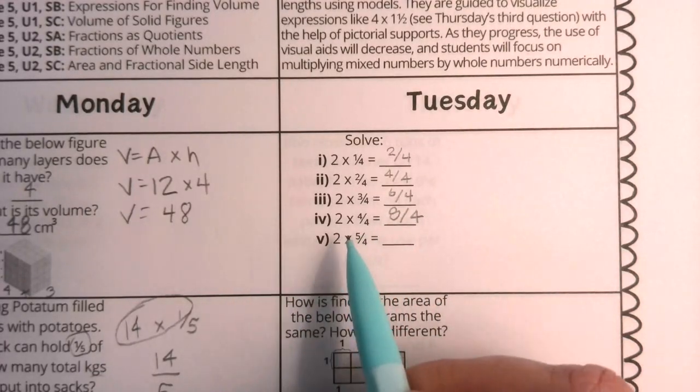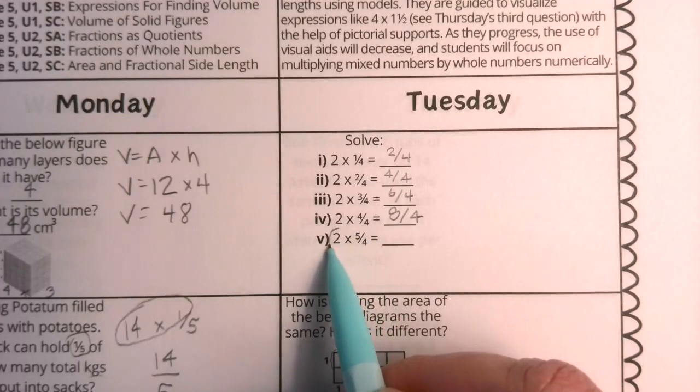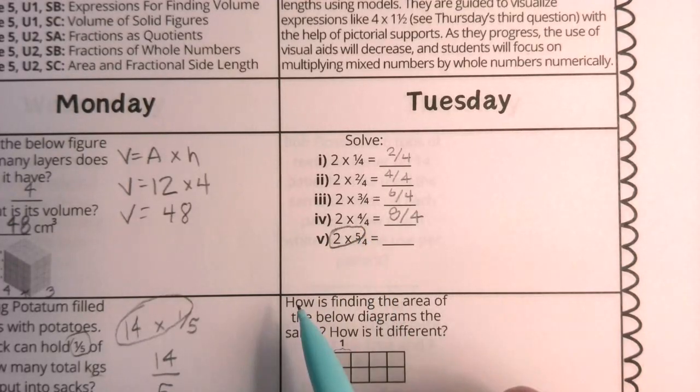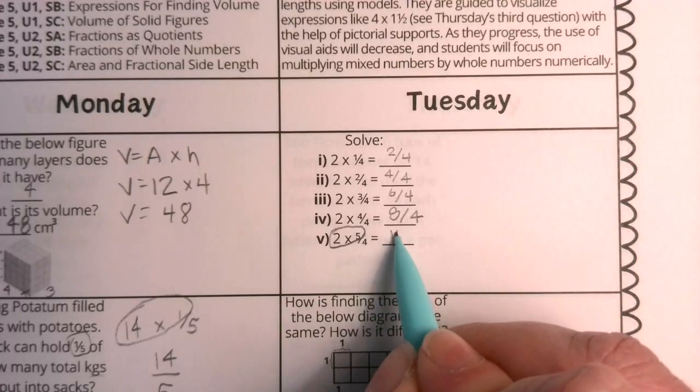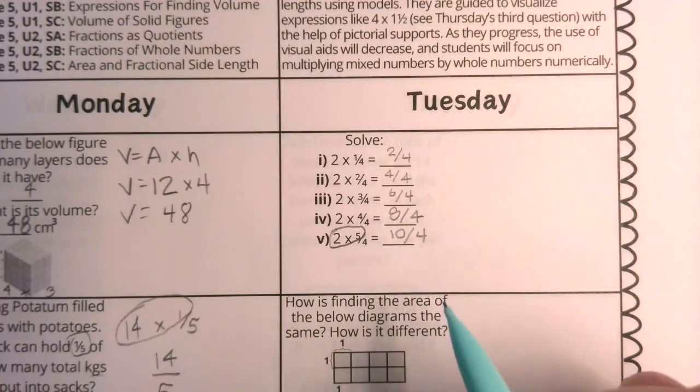This last one, once again boys and girls, two times five over four. I multiply my whole number times my numerator. Two times five is 10. And my denominator stays.